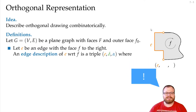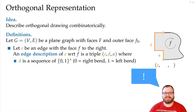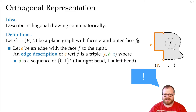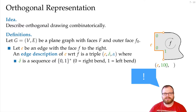We want to store two things. The edge description of E with regard to a face is a triple of the edge and two values: delta and alpha. Delta tells us the shape of edge E — how many right bends and left bends, and in what order. We store that as a sequence of zeros (right bends) and ones (left bends). Walking clockwise around the face, we first have a left bend (1), then a right bend (0), then another right bend (0), so delta is 1-0-0.